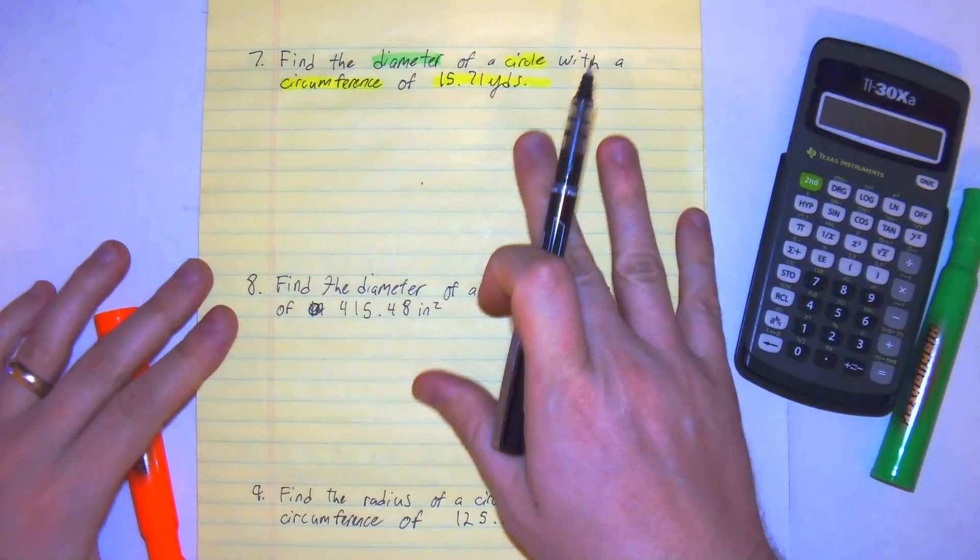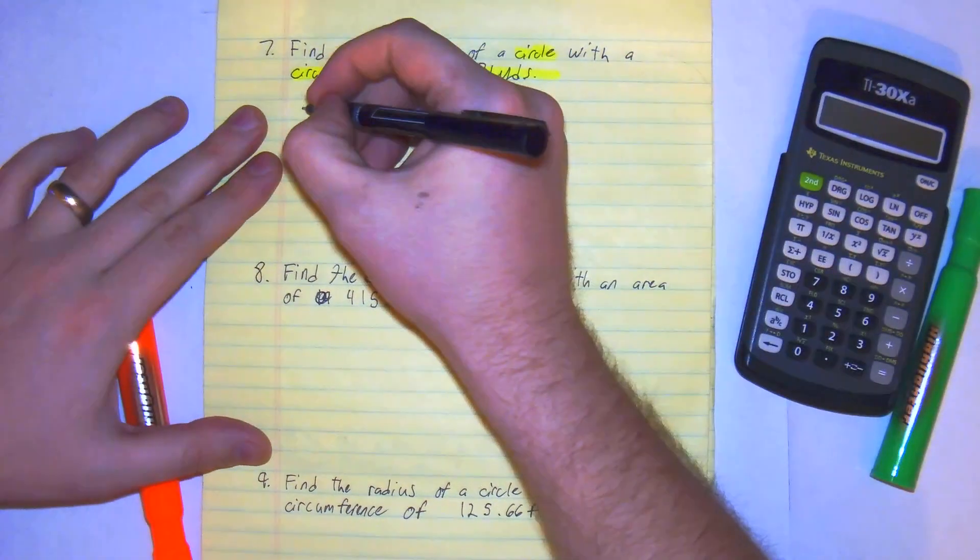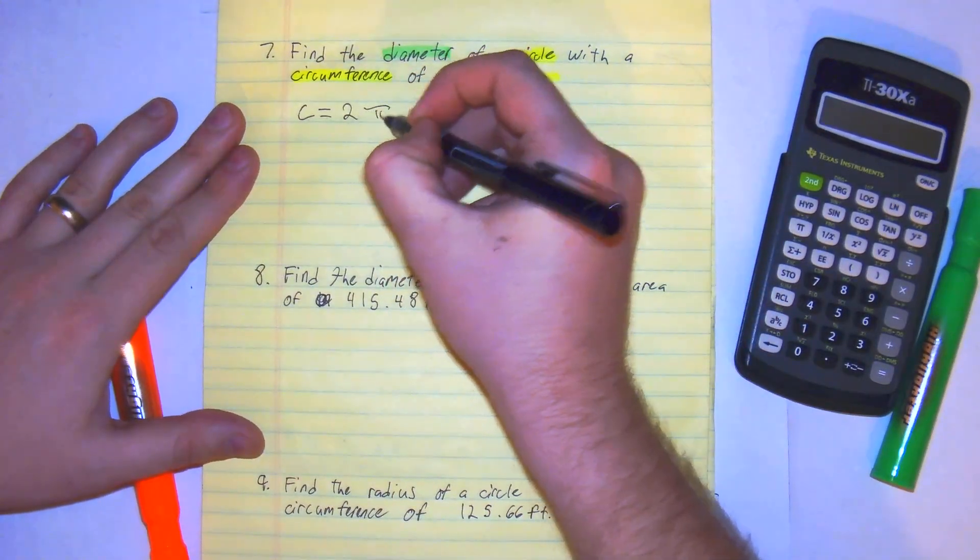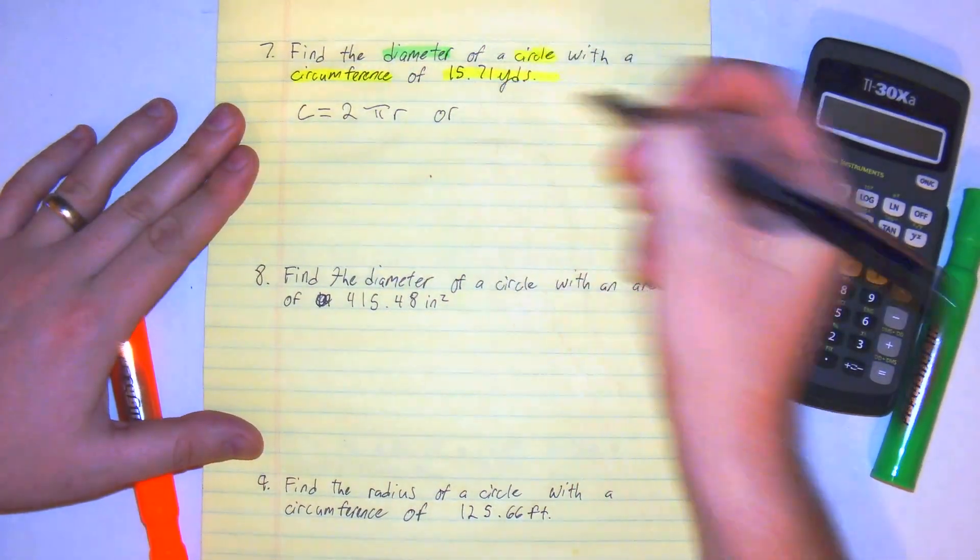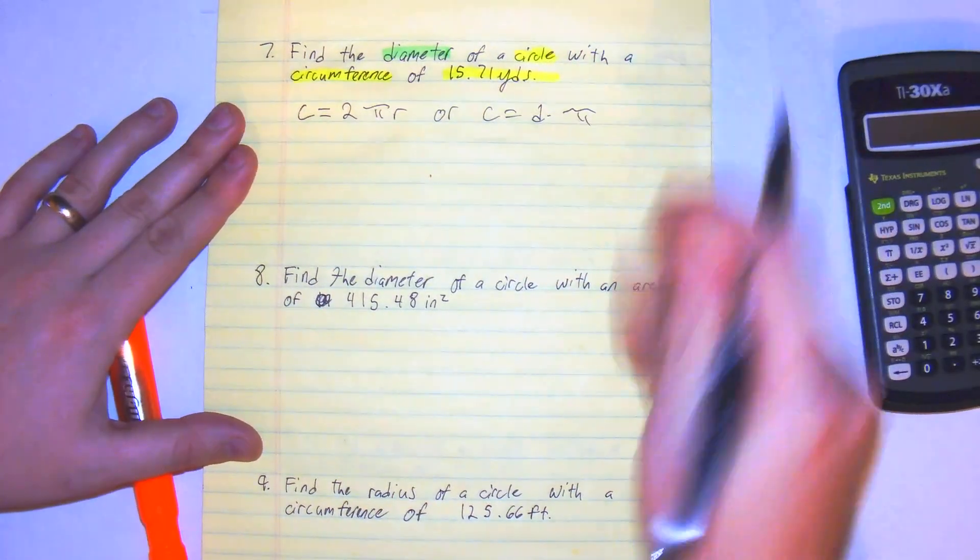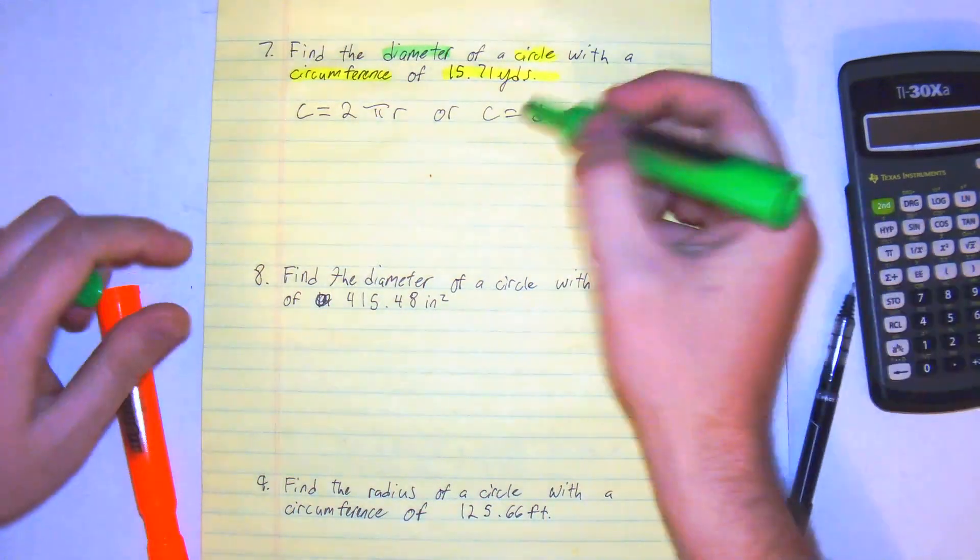So let's use this formula. Circumference has two formulas: 2πr, or C equals d times π. I'm going to elect to use d times π because we're looking for the diameter.